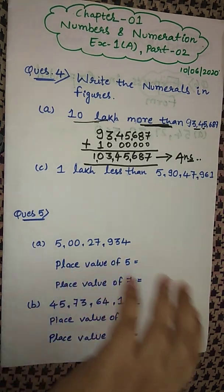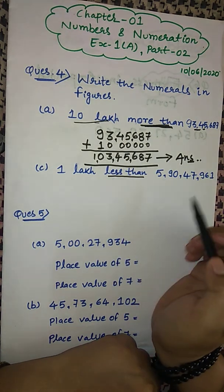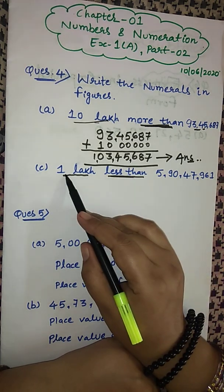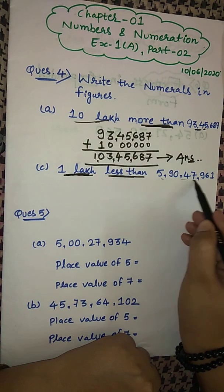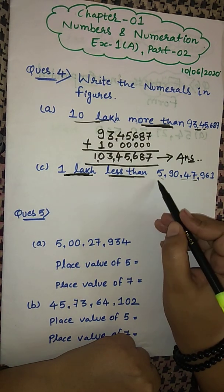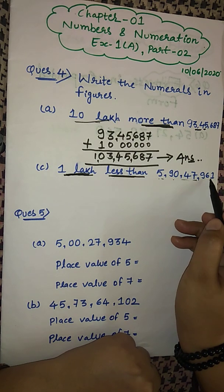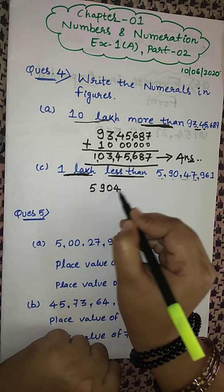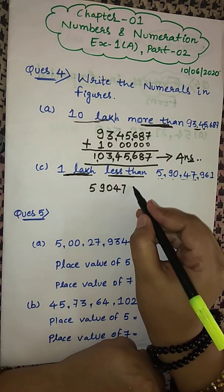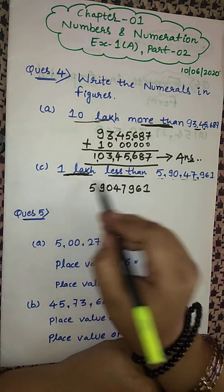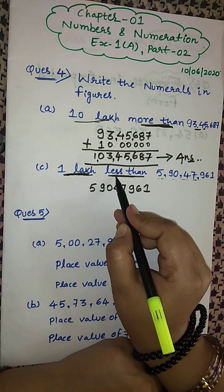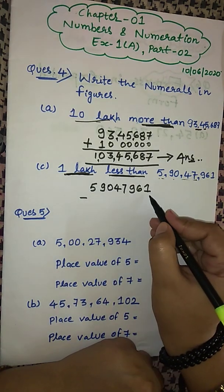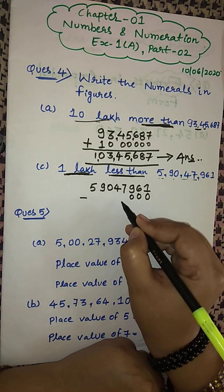Now let's look at a question with 'less than'. Less than means we have to subtract. We have to subtract 1 lakh from this number: 5 crores 90 lakhs 47,961. The place value columns are: ones, tens, hundreds, thousands, ten thousands, lakhs, ten lakhs, crores. Write this number and subtract 1 lakh from it.